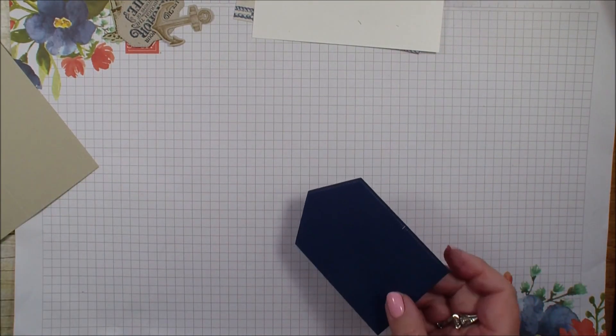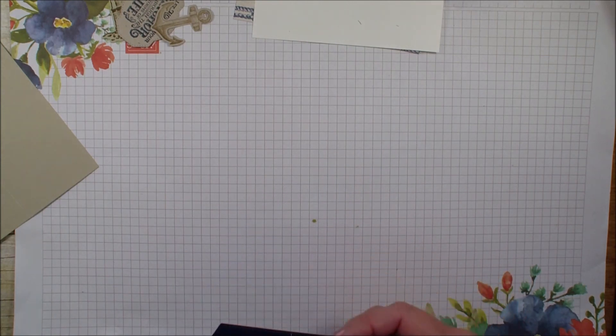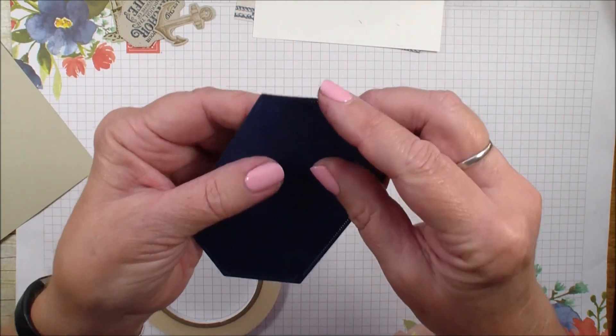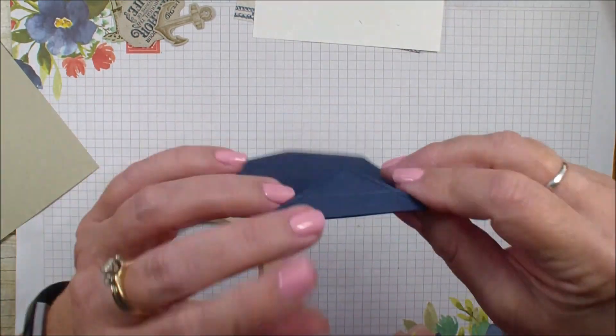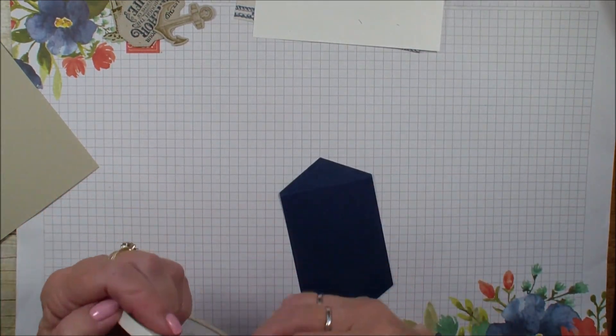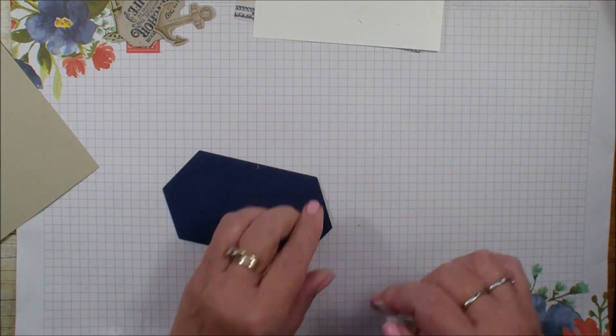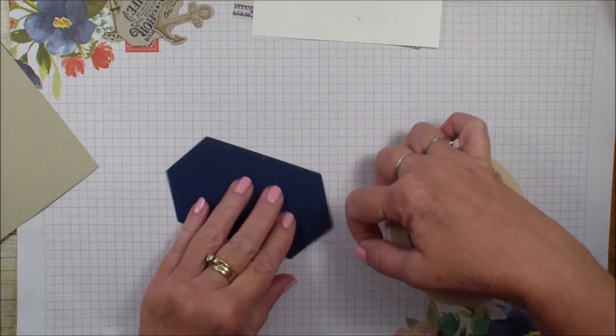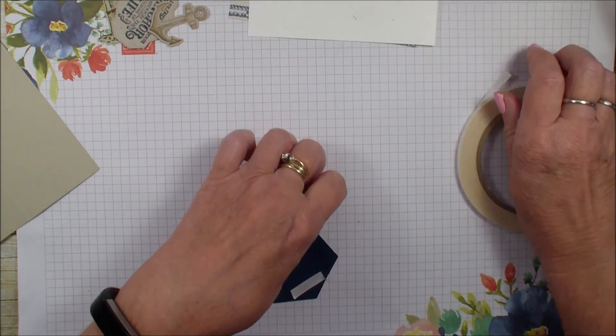Then I'm going to grab my tear and tape. I'm going to look at which way I like. One side of the stitch looks better than the other and I think it's this side. So I'm going to add some Tear and Tape like so.